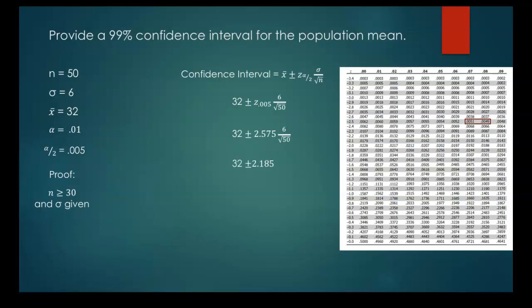We multiply that by our standard error again. So we get 32 plus and minus 2.185. So our confidence interval is 29.815 to 34.185. So we're 99% confident that our population mean will be somewhere between 29.815 and 34.185.